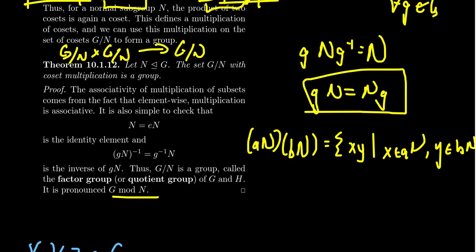It's pronounced G mod N. Why is it a group? It has to be associative, has to have an identity, and has to have inverses. Associativity I've already argued — the Frobenius product is associative as we just saw. Coset multiplication is just a special case of Frobenius multiplication: we're restricting attention to only Frobenius products of cosets. That's an associative operation as we've already argued.